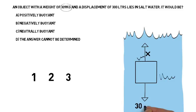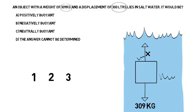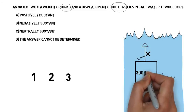The downward force is the object's weight, 309 kilograms in this case. In the centre of that square on your diagram, you put the object's volume. In this case, it's 300 litres.